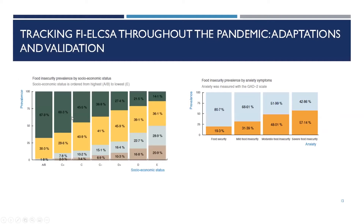At the same time, it was really important to see the coverage and validity in terms of showing how our measurements of food insecurity through the telephone survey were consistent with what we would expect. For example, in the first graph, we are showing how higher income households have almost no severe and moderate food insecurity, and they are mainly food secure, while as we move to lower socioeconomic levels, this picture flips around. We also did this with mental health question items such as anxiety symptoms, and we see the same pattern — as you're food secure, your anxiety symptoms are lower; as you become severely food insecure, anxiety becomes worse. With these adaptations and validations, we were quite certain that the ELCSA through telephone with the eight items was performing quite well.